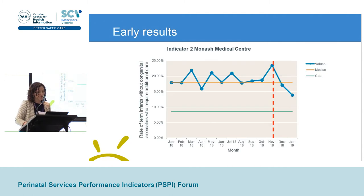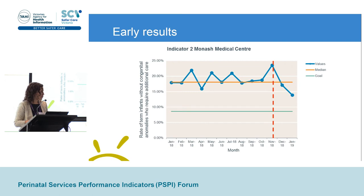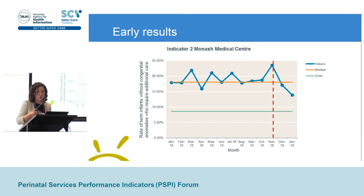In terms of our early results, given that we implemented the calculator in November 2018, I'm pleased to say we've seen a fall in our Indicator 2 results. I've highlighted Monash Medical Centre simply because we had the highest rate. We're seeing similar results across the sites, and it's really pleasing to see that rate down to 13.8% already in January of this year. We'll be continuing to audit the impact of the calculator closely in terms of both efficacy and safety.